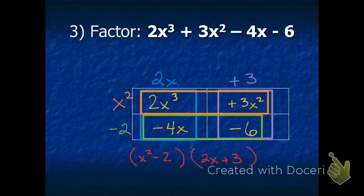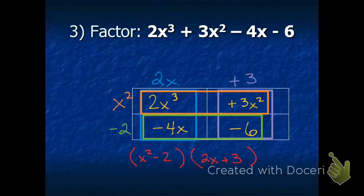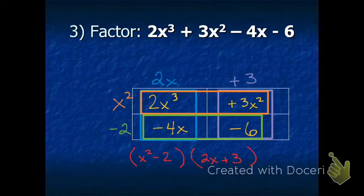The way you can absolutely tell whether it's factored correctly is to redo the multiplication. x squared times 2x gives 2x to the third. x squared times 3 gives 3x squared, which you find in the top right box. Negative 2 times 2x gives negative 4x, which is in the bottom left box. Negative 2 times positive 3 gives negative 6, which is in the bottom right box. That's how you know you are correct.